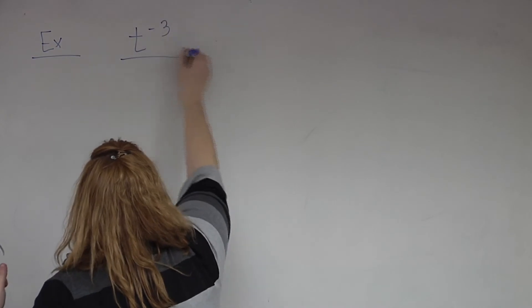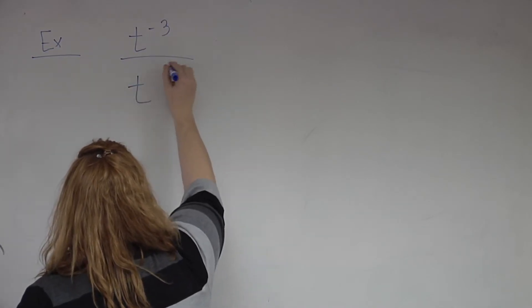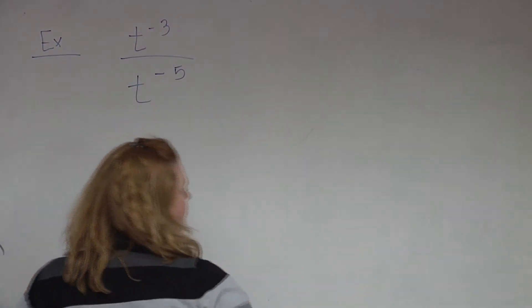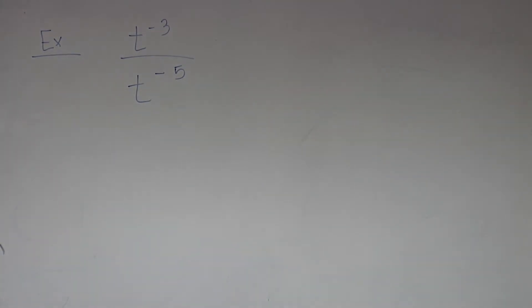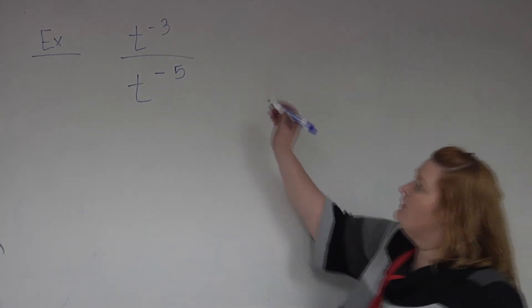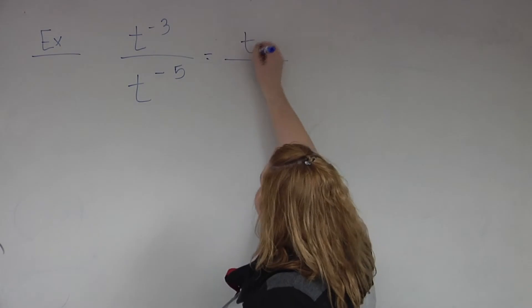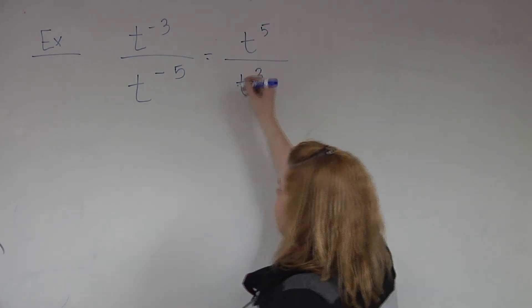t to the negative 3 over t to the negative 5. So the first thing that we're going to do is get rid of our negatives. Then we're going to reduce. So first getting rid of the negatives, what's going to happen? Flip it. We're going to flip it. So what is it going to become? t to the 5th over t to the 3rd.